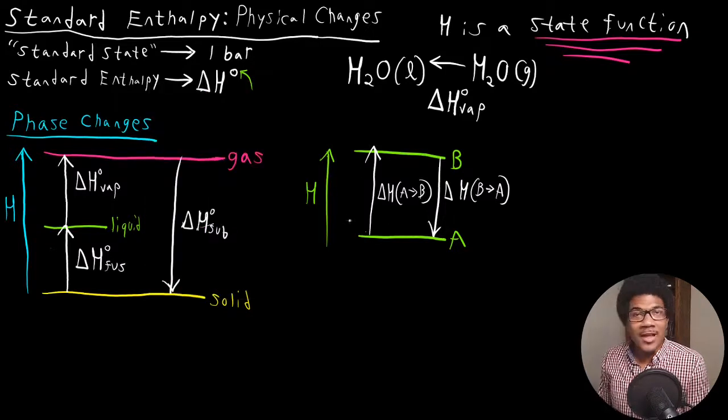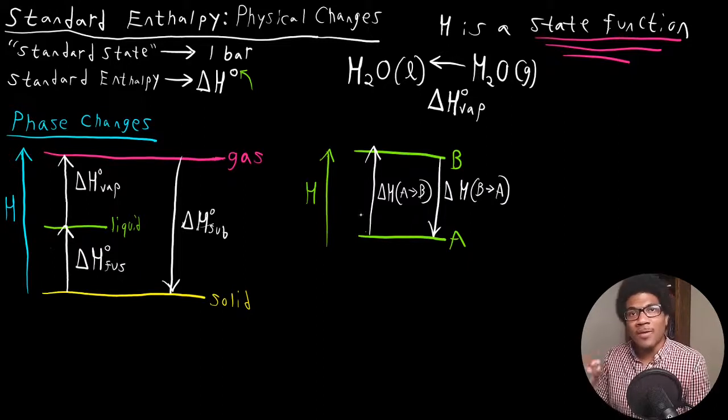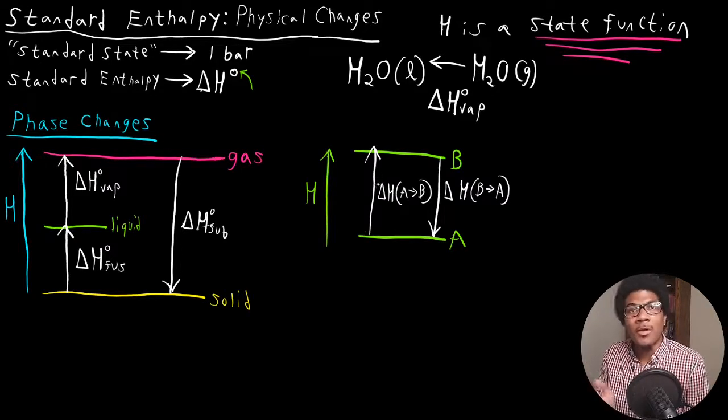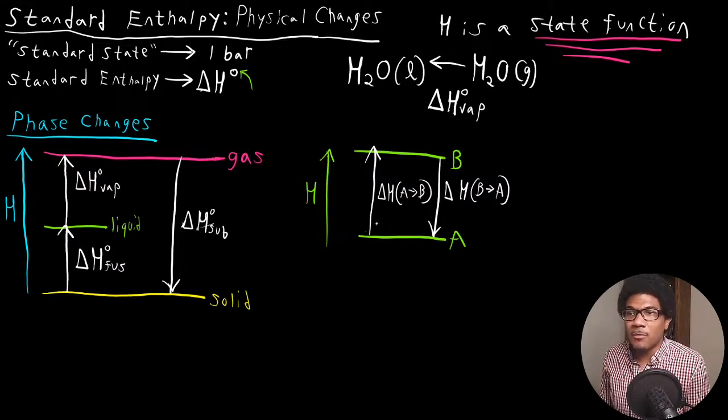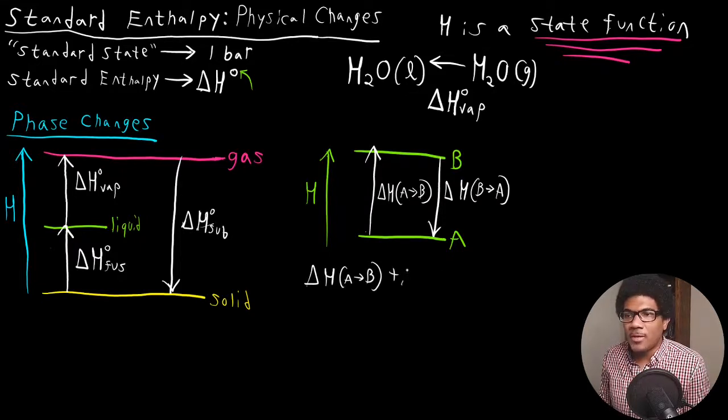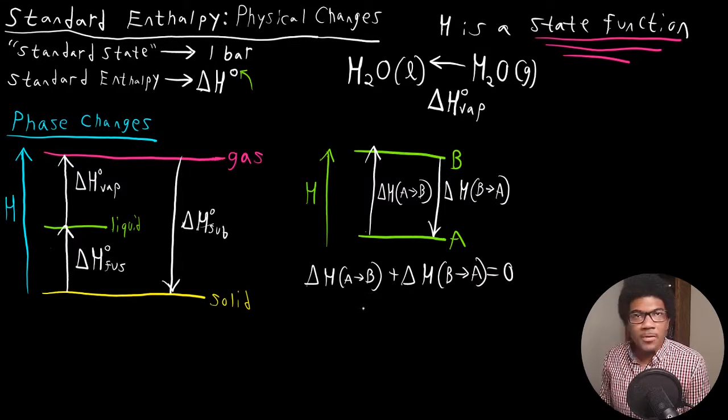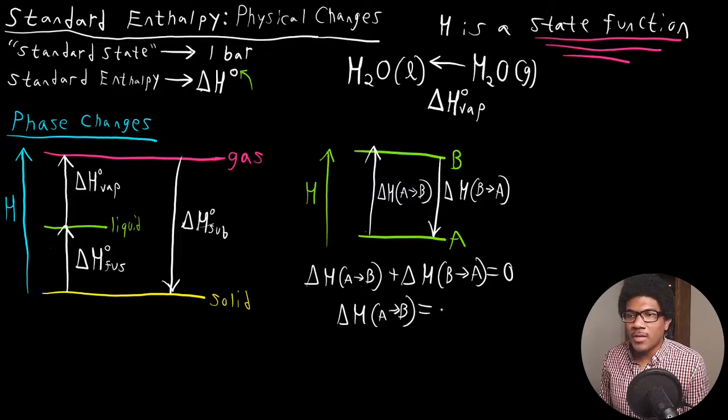What that means initially is that it doesn't matter the path that we take. As long as our initial and final points, as long as what we're starting with and what we end with are exactly the same, then we can still calculate it by summing up the enthalpy along whatever path we take. Since this is a state function, if we go from A to B and from B to A back, that's basically a cycle. We're starting and ending in the same place. Because enthalpy is a state function, that means if we sum both of these up, they have to equal zero. Delta H A to B plus delta H B to A must be equal to zero. So what does that mean for the relationship between these two? That means we just change the sign. Delta H A to B will just be equal to negative delta H B to A.